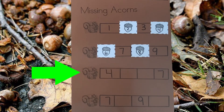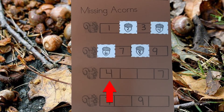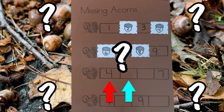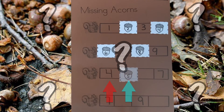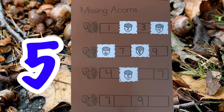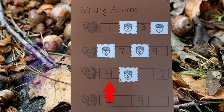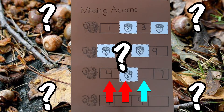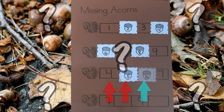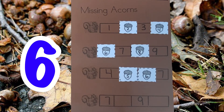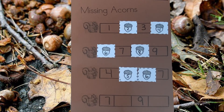Now let's help the third squirrel find his acorn. The first number is 4. What comes after 4? It's the number 5. 4, 5. And what comes after 5? 6. 6 comes after 5. 4, 5, 6, 7.